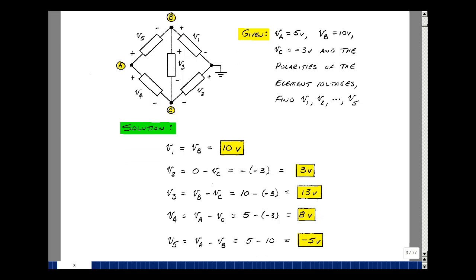And lastly, element five is here, node voltage a, minus node voltage b, that's going to be equal to 5 volts, minus 10 volts, so you get minus 5.